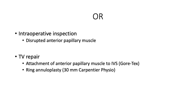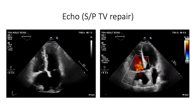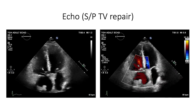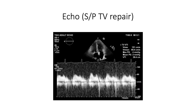This patient was taken to the operating room and intraoperative inspection demonstrated a disrupted anterior papillary muscle. A tricuspid valve repair was performed by reattachment of the anterior papillary muscle to the interventricular septum using Gore-Tex suture combined with a ring annuloplasty using a 30-millimeter Carpentier Physio ring. The post-repair four-chamber view shows normal tricuspid valve leaflet motion without significant residual TR, good biventricular function, and no significant post-repair tricuspid valve stenosis with mean of 2 and peak of 4.